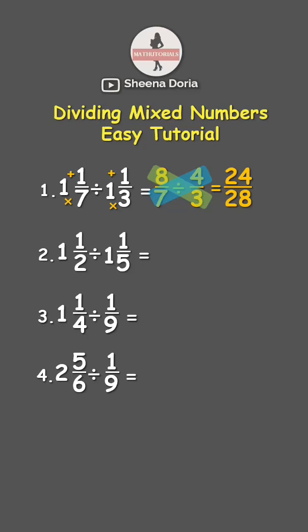Next, 1 and 1 half divided by 1 and 1 fifth. Let's convert first each into improper fraction. 2 times 1 is 2, plus 1 is 3. Then keep denominator 2.